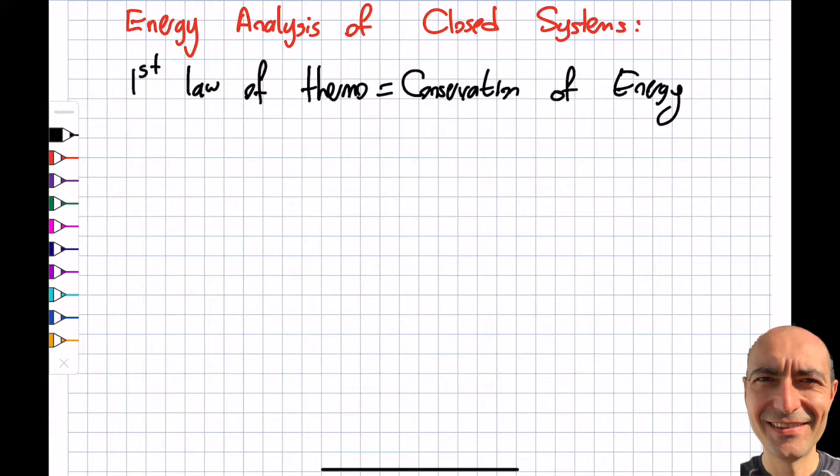Now we need to talk about what a closed system is. A closed system, also called control mass, is a system we pick where the mass is not leaving or entering the system. A typical example we use in thermodynamics is a piston-cylinder device.